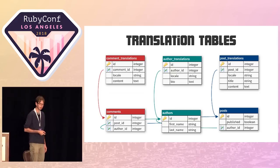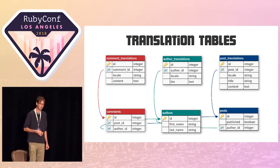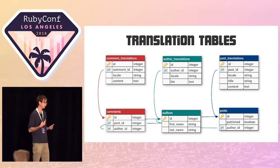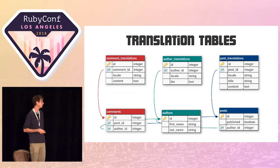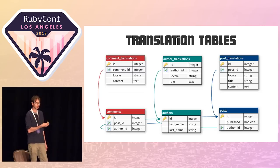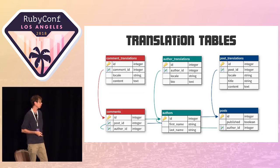Another common approach is called translation tables. This allows you to scale more easily to more languages. Instead of columns on the model table, you create a separate translation table. The language, instead of being a suffix on the column name, gets its own column on the translation table. You have a foreign key back — `comment_id` references comments — plus a locale column and one or more columns for translated attributes. You create an association, and to get the title, you go through the translations, find the one in the current language, and grab the attribute.